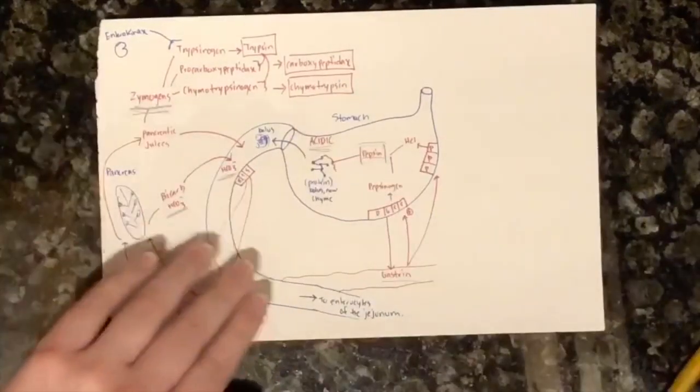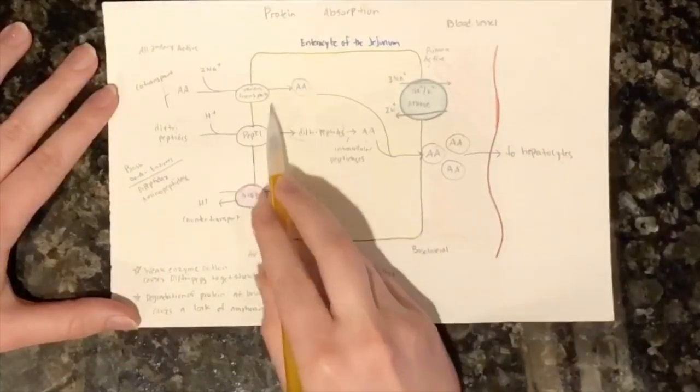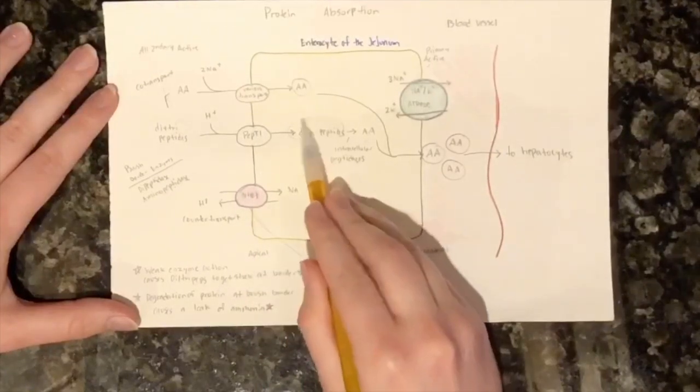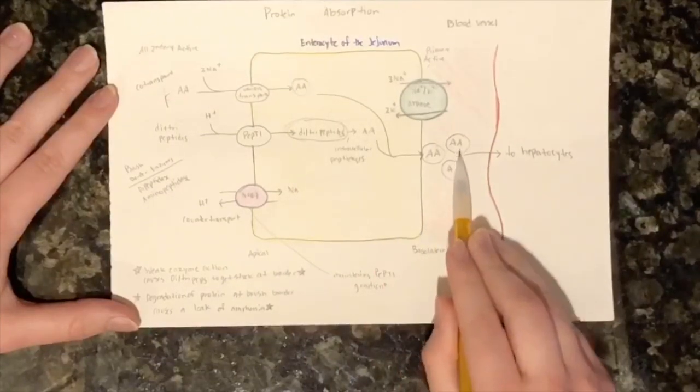At the brush border of the jejunum, we are left with amino acids as well as some di- and tripeptides. These enter the enterocyte via different transporters. Inside the enterocyte, all remaining di- and tripeptides are broken down into amino acids which leave the cell and travel to the liver via the hepatic portal vein.